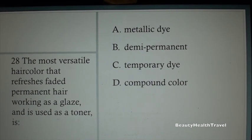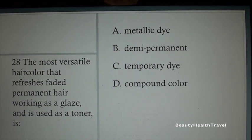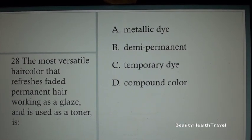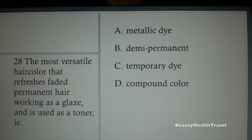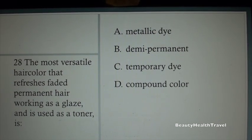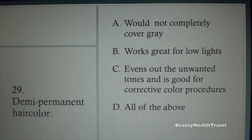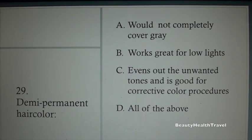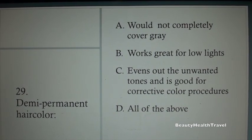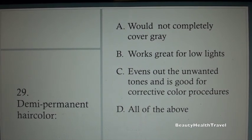Question 26: Temporary colors include: A. Hair mascara and spray-on hair color, B. Shampoo tint and color rinses, C. Color mousses and gels, D. All of the above. Question 27: Hair color that lasts from six to eight shampoos and is stronger than temporary color is: A. Temporary, B. Permanent, C. Semi-permanent, D. Demi-permanent.